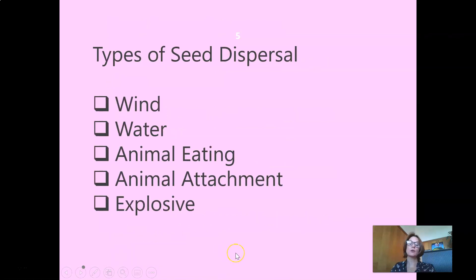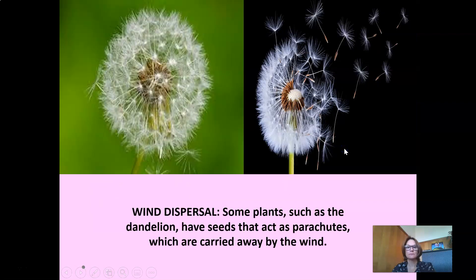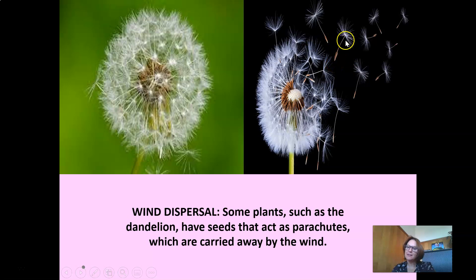Let's take a closer look at the different types of seed dispersal. We have wind dispersal, water dispersal, animals eating, animal attachment, and explosive seed dispersal. Wind dispersal: some plants, such as the dandelion, have seeds that act as parachutes and are carried away by the wind. Those seeds are very tiny and very light so they can easily be dispersed by the wind.